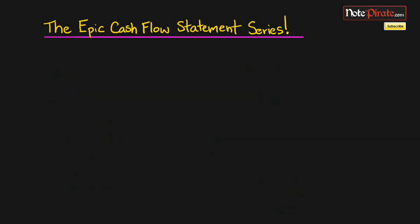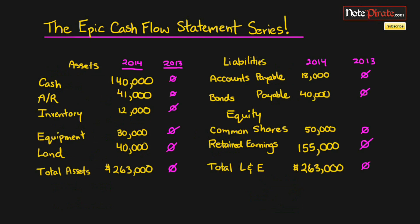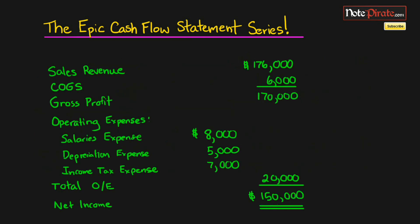If we go back to the balance sheet, we can see there is no salaries payable or accrued liability. So we know that the salaries expense was paid in cash. And if the entry was credited to accounts payable, we've already adjusted for accounts payable, so regardless it's going to work out. We can go back to our income statement and say that salaries expense is already completed — it is a cash expense.